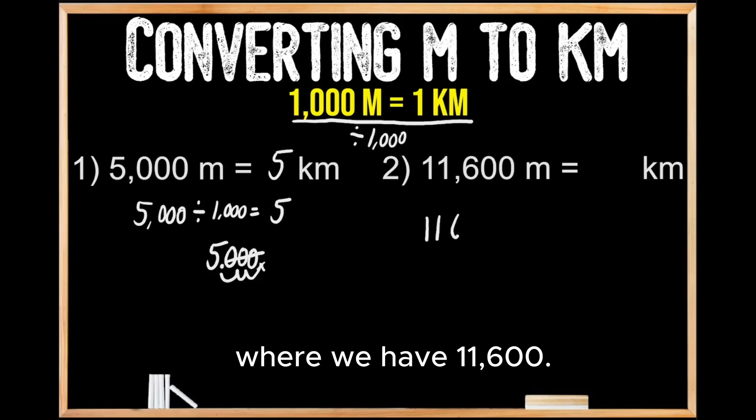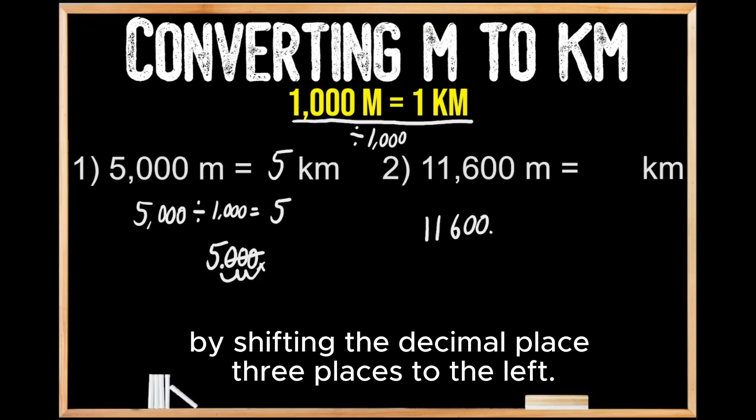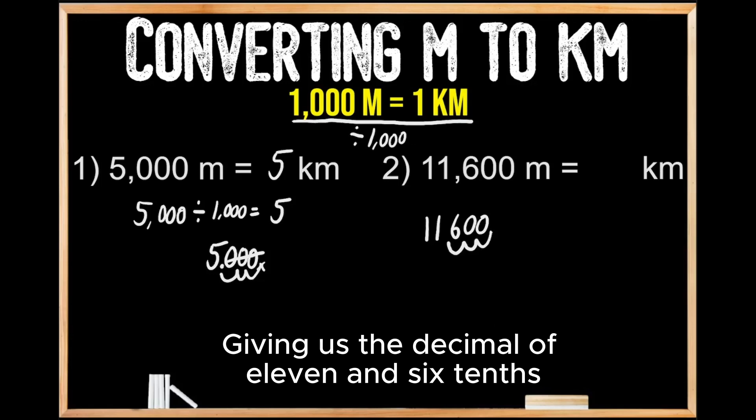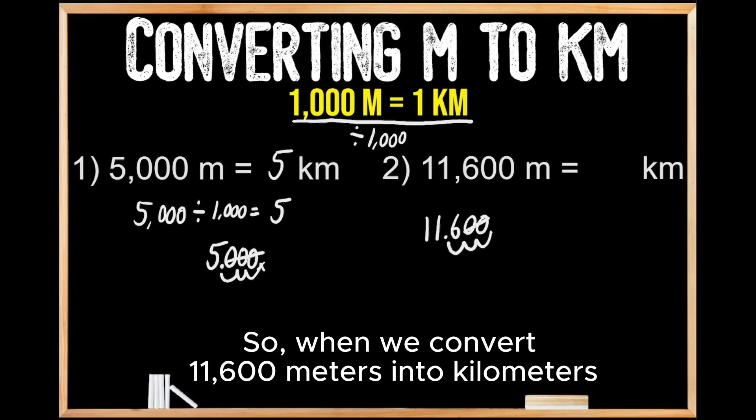We have 11,600. There's a decimal place to the far right, and then we're going to divide this number by shifting the decimal place three places to the left, giving us the decimal of 11 and 6 tenths, because we don't have to include those zeros there.